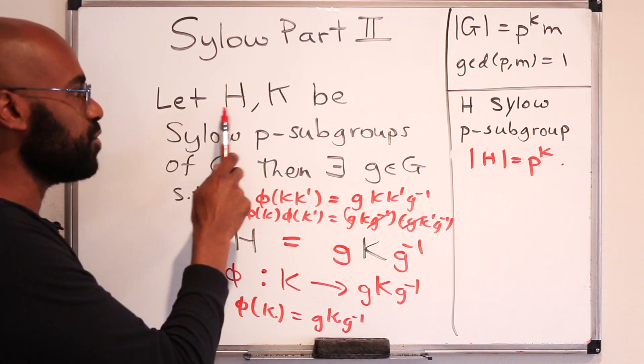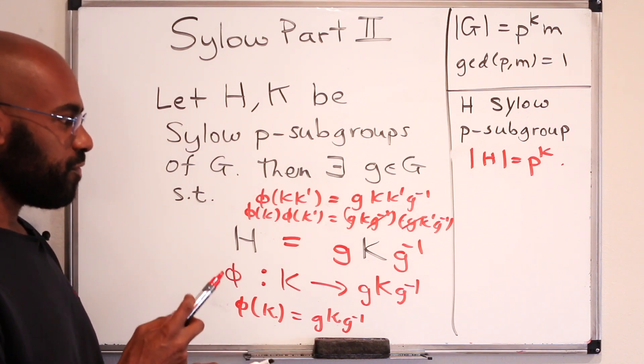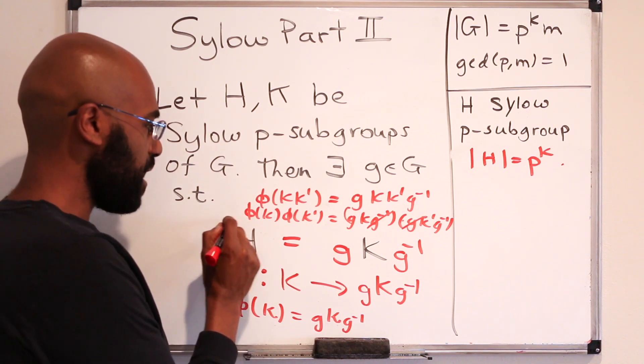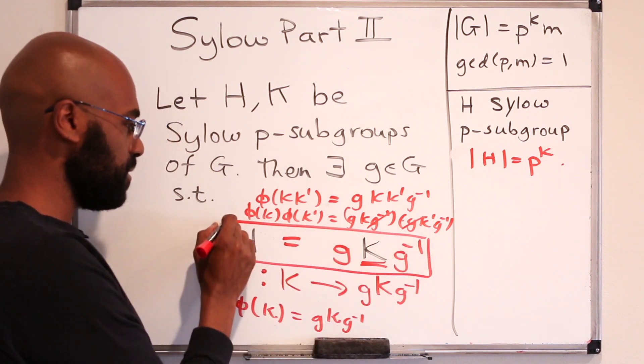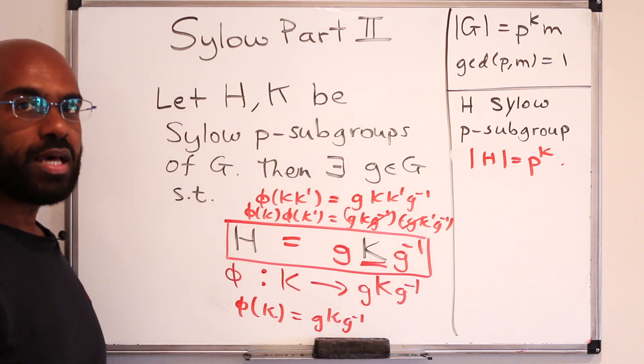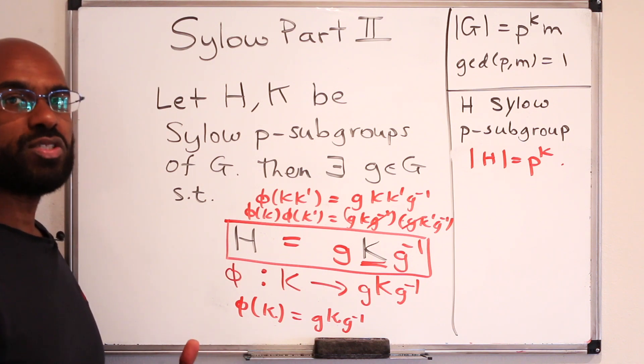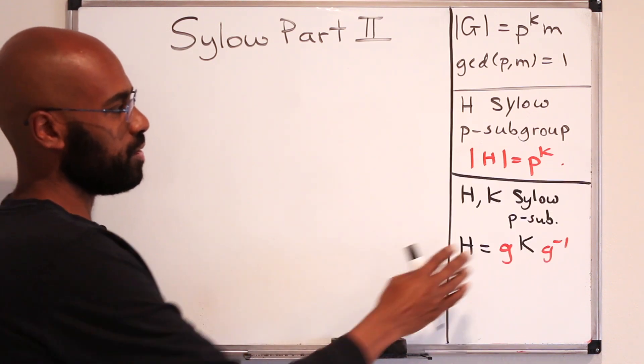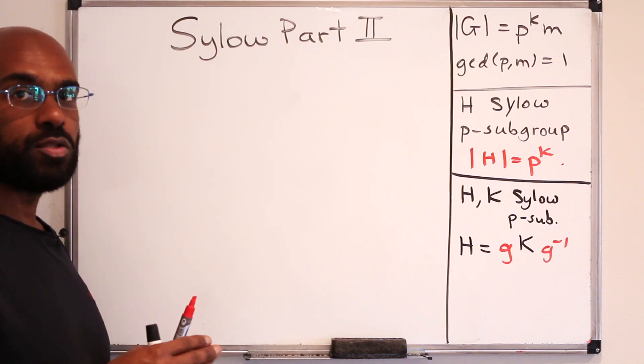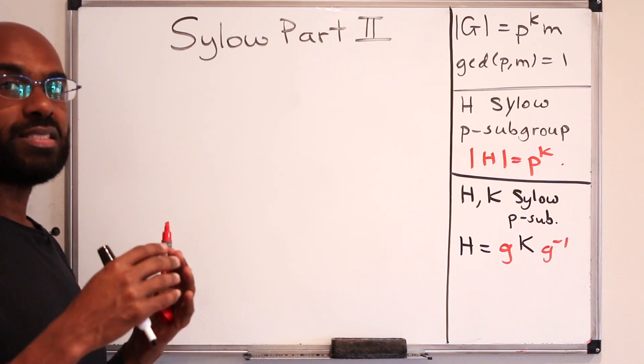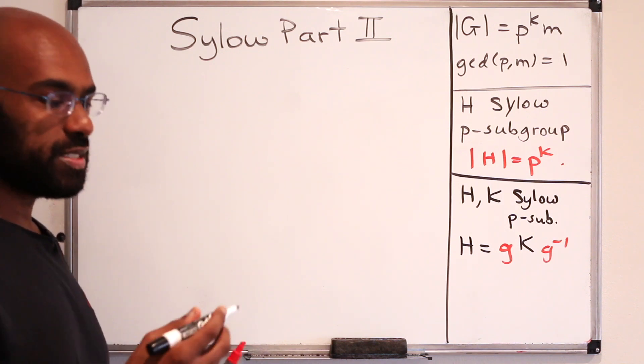So we get that two Sylow P subgroups have to be isomorphic, but even stronger that if you have one Sylow subgroup K, that any other Sylow subgroup has to be a conjugate of it. So let's go ahead and actually try to prove this using some intuitive idea. Okay, so I've written the types of things that are involved right over here. So the proof of the first part of the Sylow theorem involved a set and a group action. So we're going to do the same thing here.